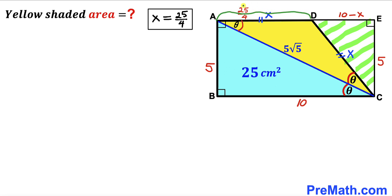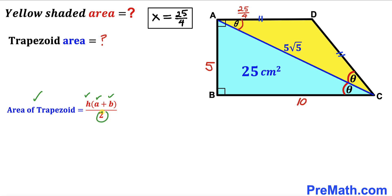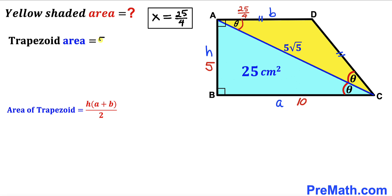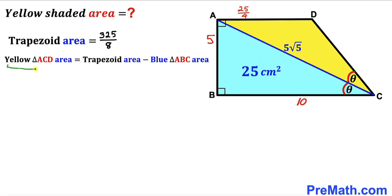Now we calculate the trapezoid area using Area = h × (a + b) / 2, where h = 5, a = 10, and b = 25/4. Substituting: Area = (5/2) × (10 + 25/4). Simplifying gives a trapezoid area of 325/8.